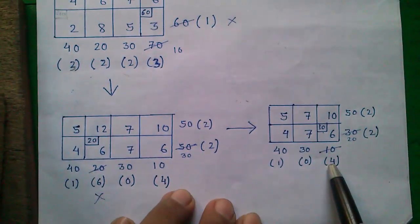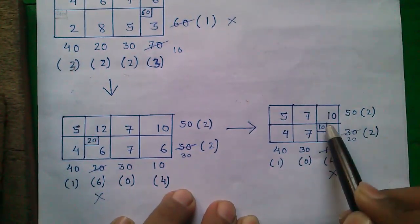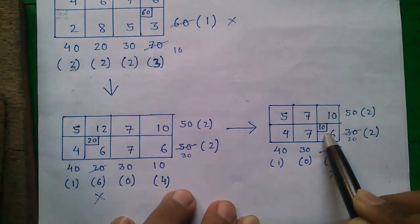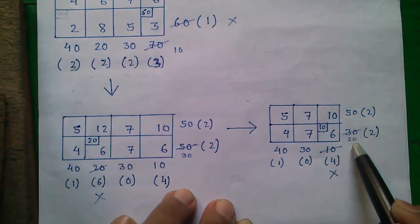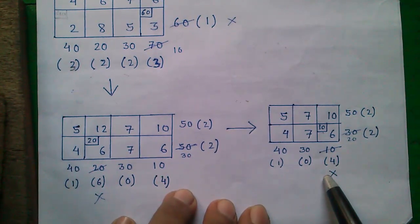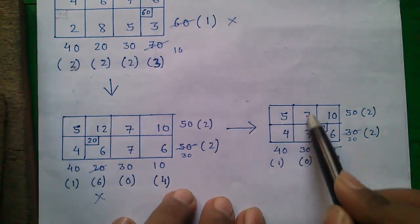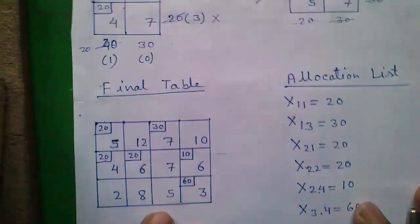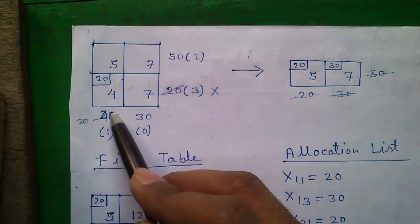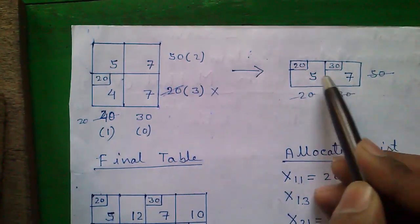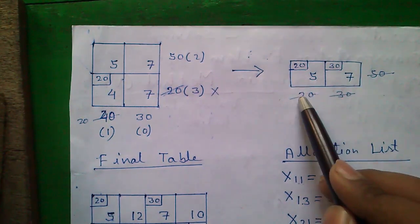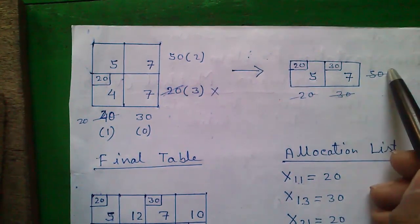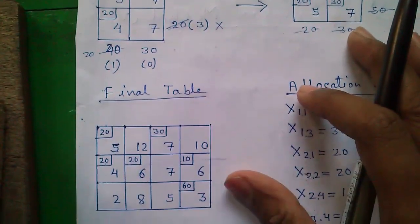Again the same process: find the largest penalty, and in that column the smallest number is 6, with supply 30 and demand 10. So we allocate 10, leaving 20 of supply remaining, and this column is exhausted. We carry only columns 1 and 2 to the next table. Continue doing this until all demands and all supplies are fulfilled or exhausted.